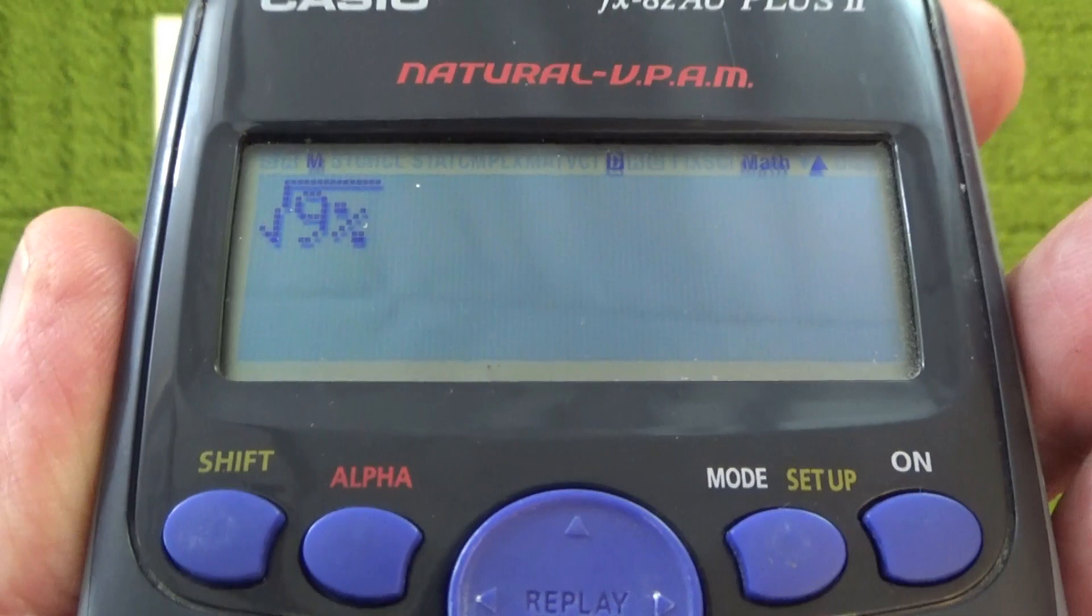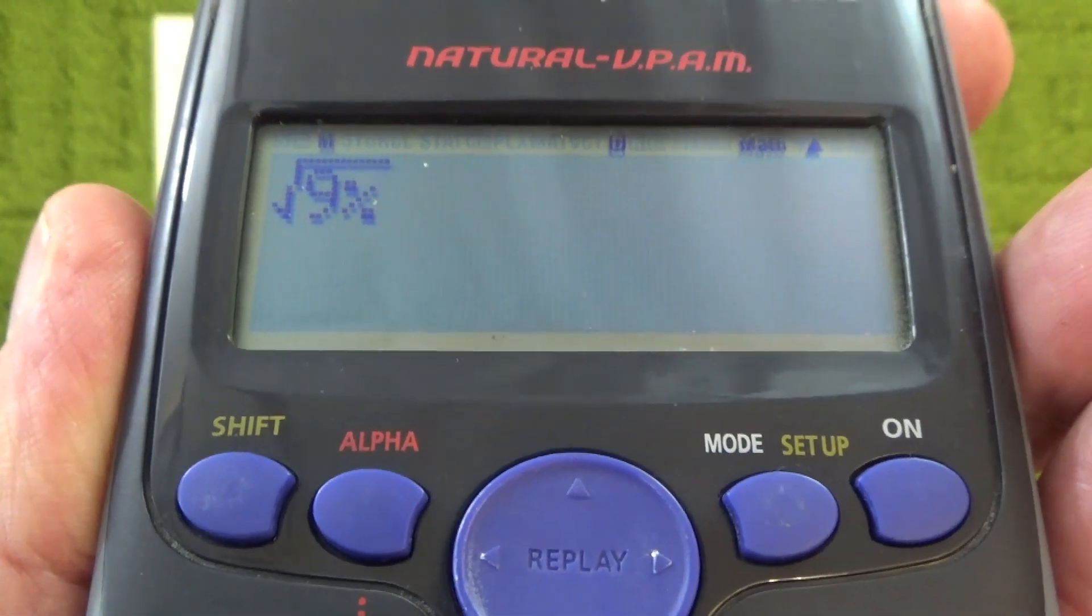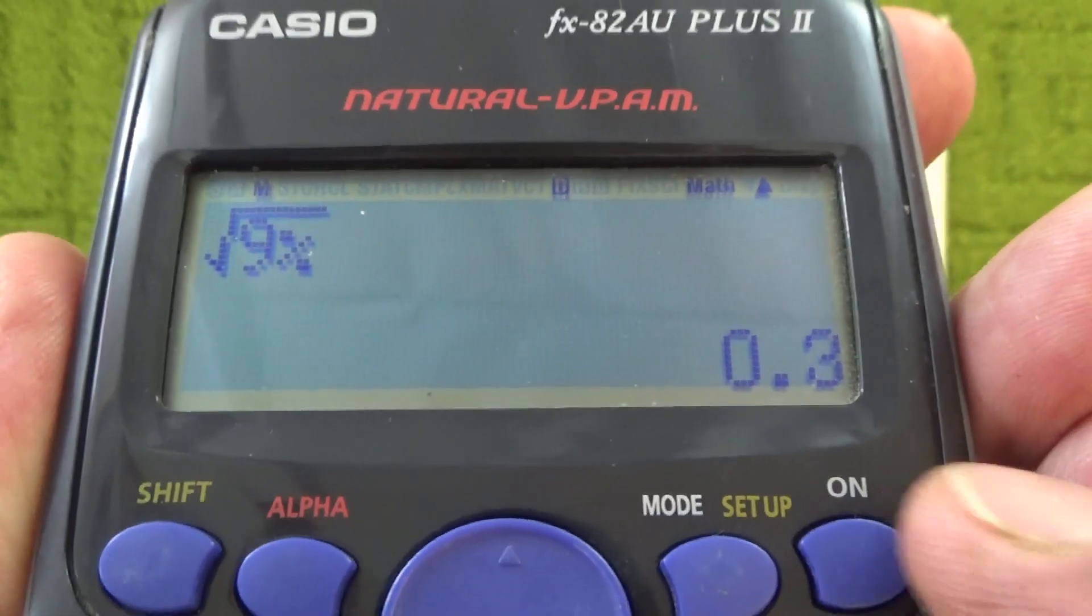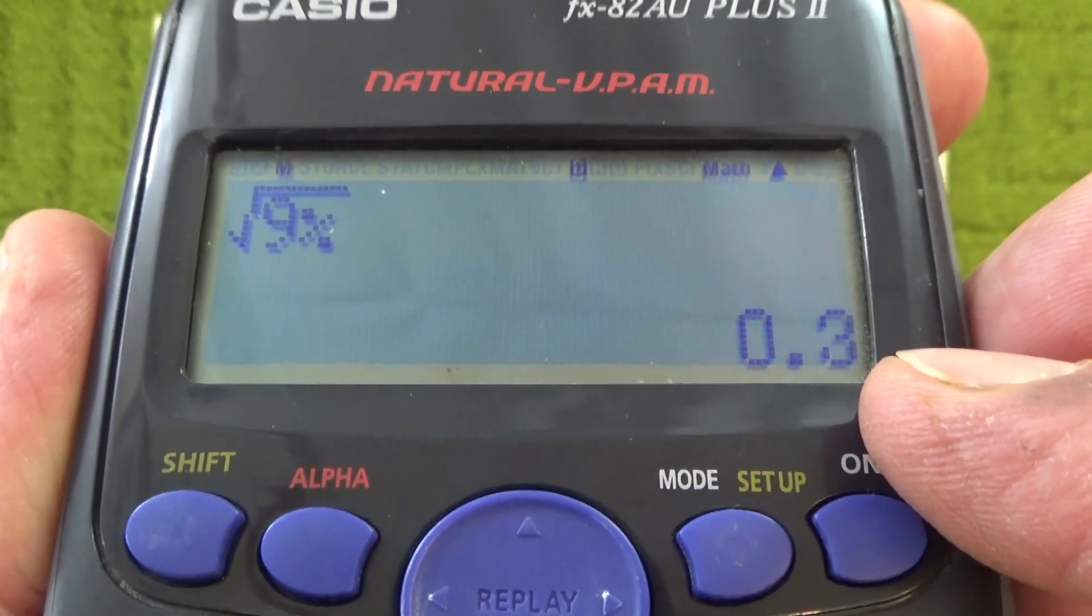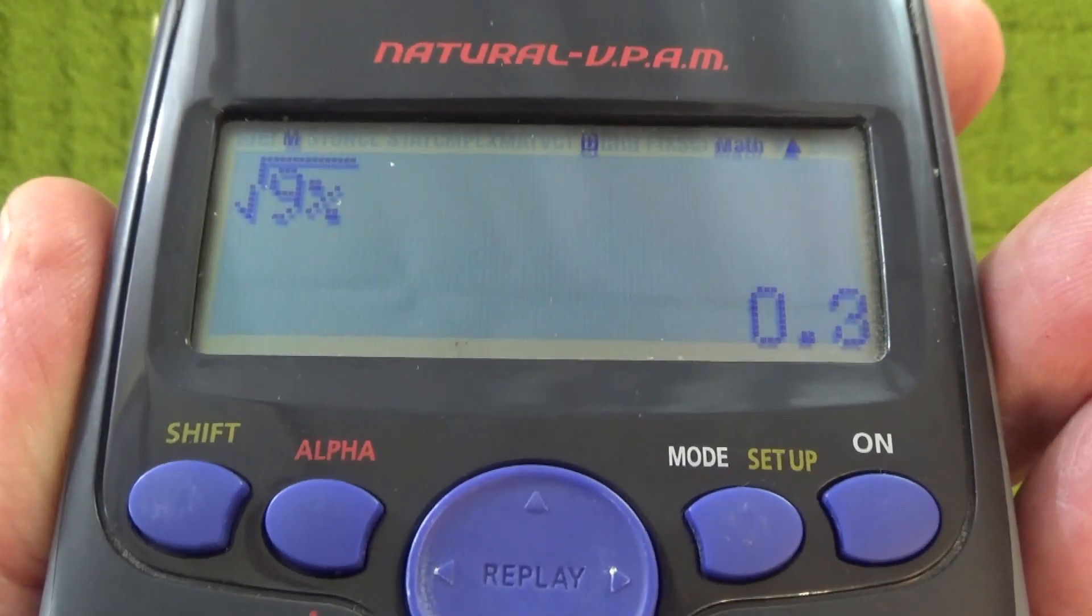So there we go. I'm asking the calculator, what is the square root of 9%? Press the equal button and the answer is 0.3, which is 0.3 as a decimal.